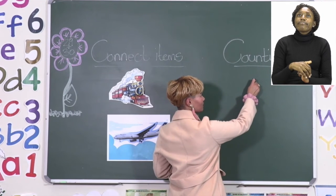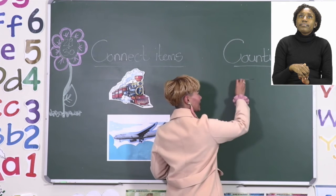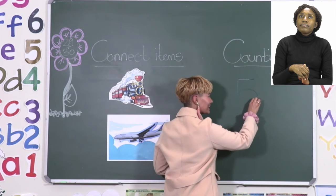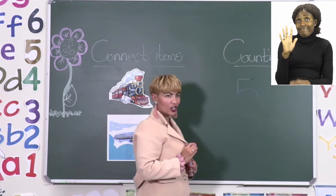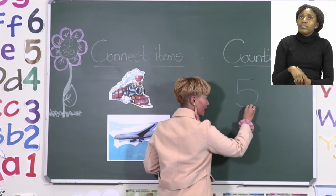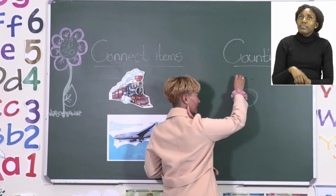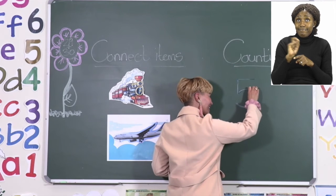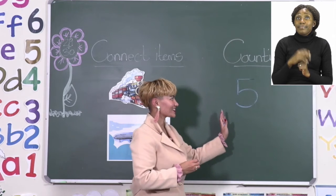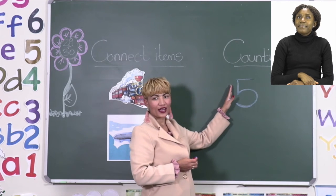To write the number five, you start with a small little line, then you go down, and then you make a little half circle like that — you don't go all the way, you stop. So: one little line, go down, then make the little circle. It looks like a little stomach going out. This is your number five.